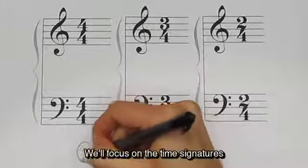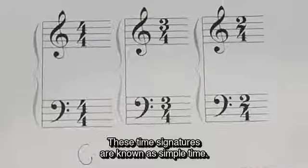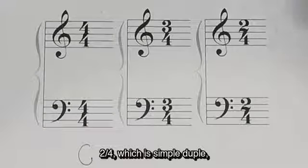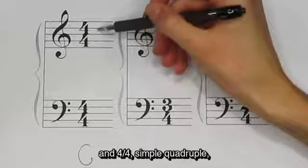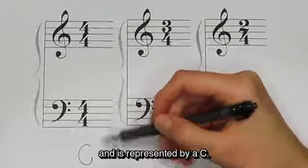We will focus on the time signatures with a 4 on the bottom for now. These time signatures are known as simple time: 2-4 which is simple duple, 3-4 simple triple, 4-4 simple quadruple, which is also known as common time and is represented by a C.